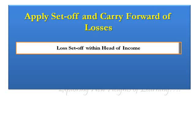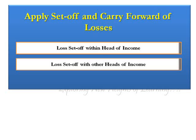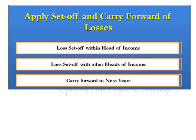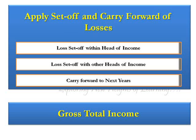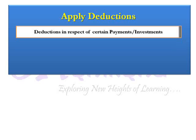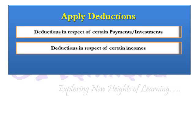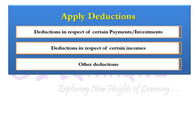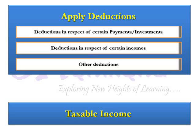The next step is to apply set-off and carry forward of losses. Although we calculate income under various heads, there can also be losses under particular heads. Income tax law allows the set-off of certain losses against income of other heads, or carry forward to be set off against income of the next year. Once all these provisions are applied, we reach the gross total income. Then we deduct the deductions allowed under the income tax law, which are based on different criteria such as deductions for certain payments and investments, or deductions in respect of certain incomes. After deducting these, we get the total taxable income.